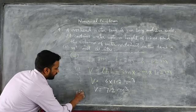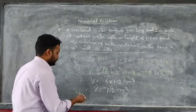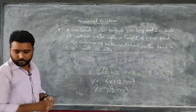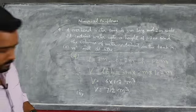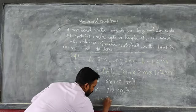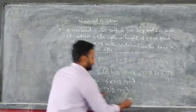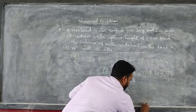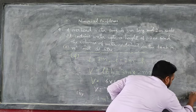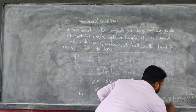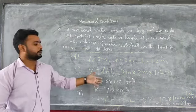In the second part, we convert 7.2 cubic meters into liters. Since 1 cubic meter equals 1,000 liters, volume equals 7.2 into 1,000, which gives 7,200 liters. This is the volume of water in the tank in liters. Thank you.